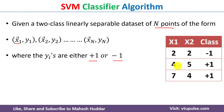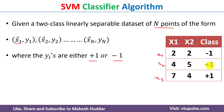Let's take an example. We have three input vectors — x1, x2, and x3 — each containing two attributes. The last column is the target: y1 is -1, y2 is +1, and y3 is +1.